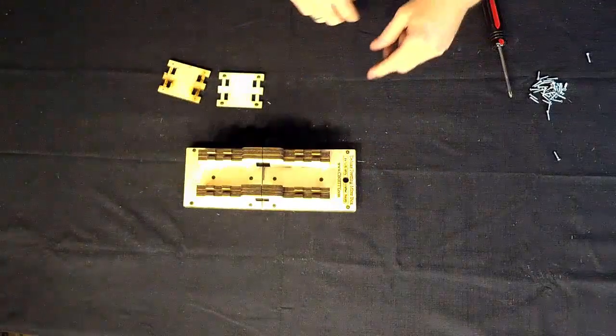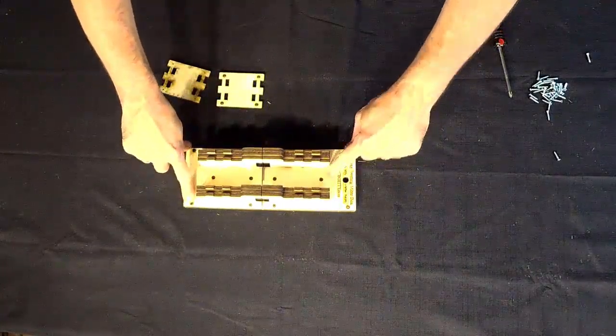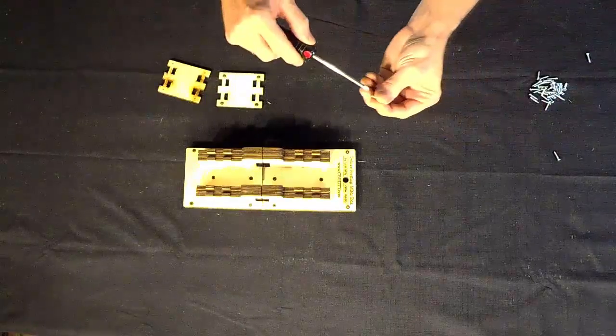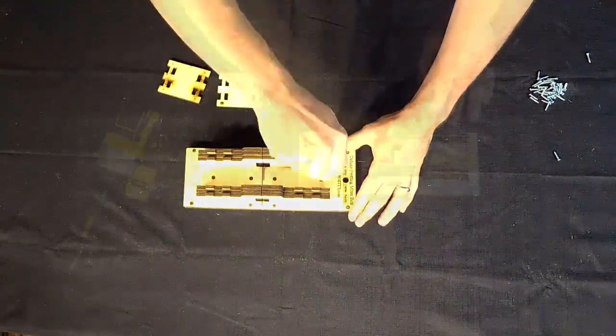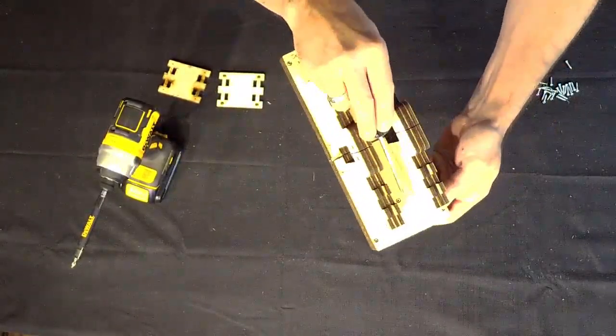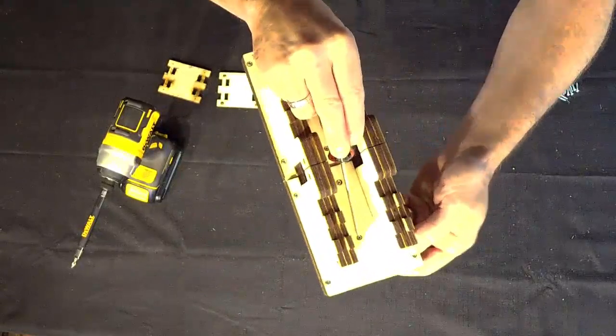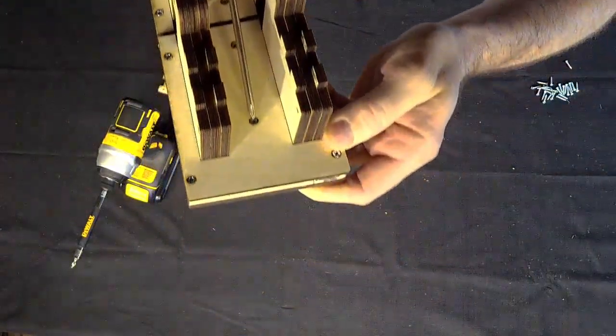Now we can begin inserting the screws into the holes through the base. Be sure to get the screw heads at least flush or ideally countersunk slightly beneath the surface of the wood inside the miter channel.